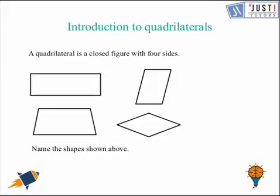Now let's look at the introduction to quadrilaterals. A quadrilateral is a closed figure with four sides. Let's try to name the shapes that are shown here.